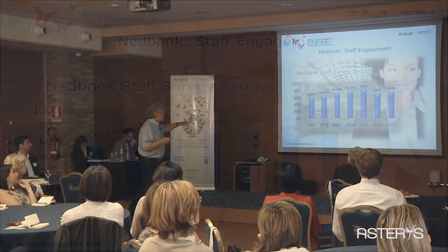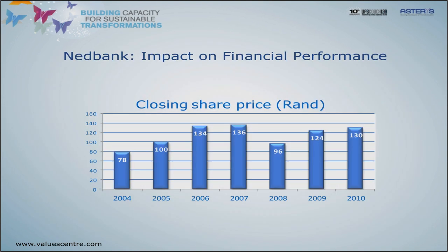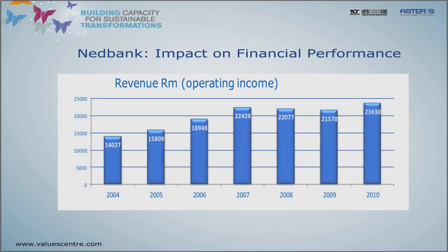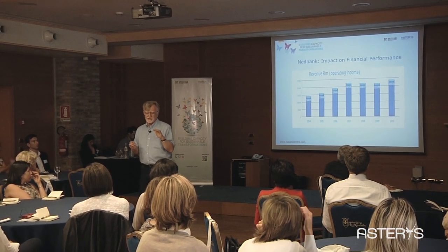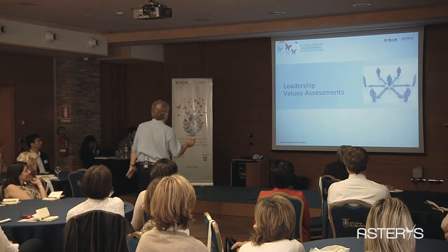Staff engagement dipped in 2010 but then climbed again as entropy went down. The share price saw a dip in 2008 due to the global financial crisis but has been heading back up. Revenue increases correspondingly. Time after time — you can see lots of case studies at valuescentre.com — as entropy goes down and values alignment goes up, every positive indicator: staff engagement, income, everything climbs.